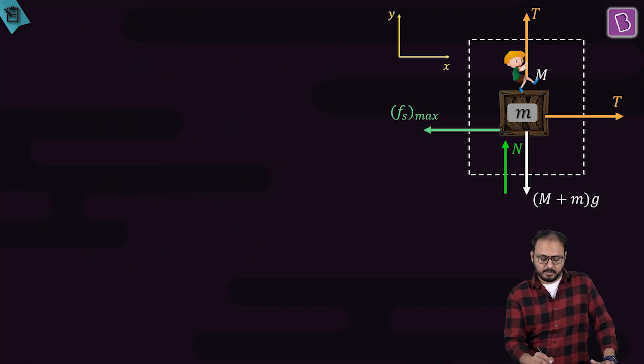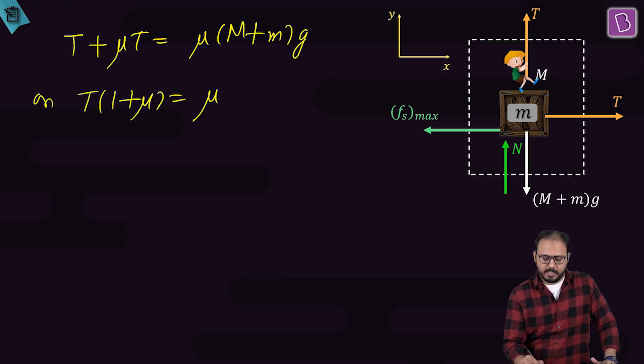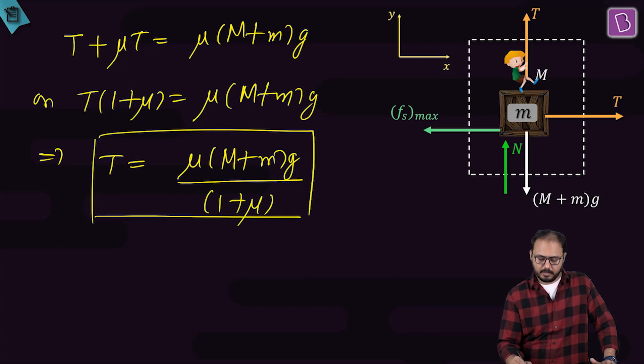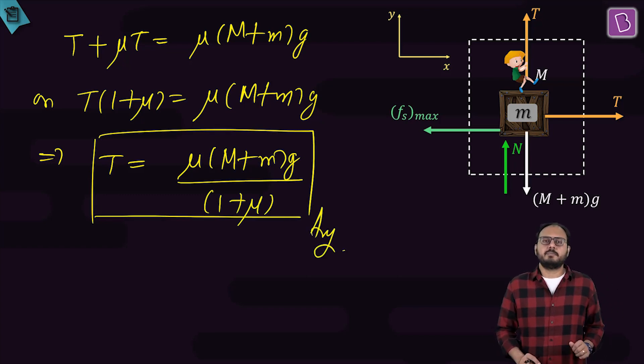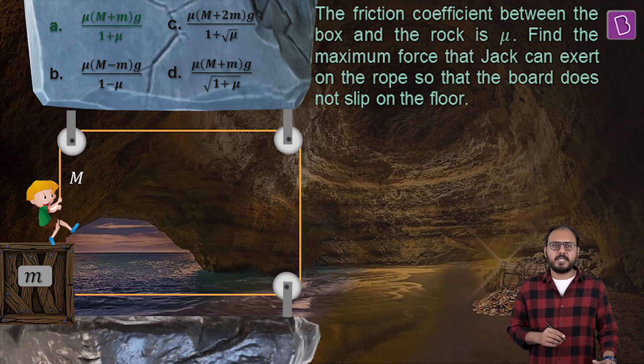Come on, come on, come on. T plus mu T is equal to mu M plus Mg. T, T 1 plus mu is mu M plus Mg. And I am about to have the answer. The T you are looking for is mu M plus Mg upon 1 plus mu. Do you agree? Is this the force which is the maximum the boy Jack can apply that there is no slipping? What happens if the force applied is more than this? There will be slipping. Since I ask this question in an objective sense, the answer is A.